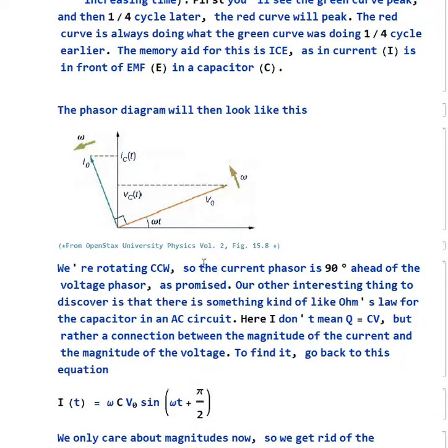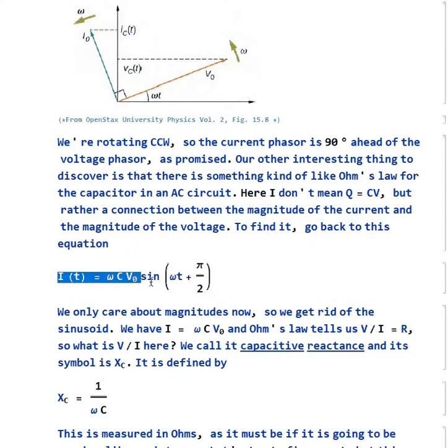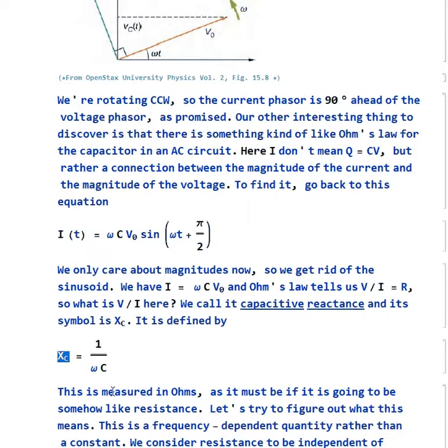One other interesting thing to discover is that there's something like Ohm's law for the capacitor in an AC circuit. I don't mean the Q = CV thing that's like Ohm's law, but rather a connection between the magnitude of the current and the magnitude of the voltage. If we want to find it, we can go back to this equation for i. If all we care about is magnitudes, we can get rid of the sine part, and we have essentially i = ωCV₀. Ohm's law tells us V/I is the resistance, but V/I here is something we call the capacitive reactance. The symbol is X_C, and we could write it as 1/ωC. This has to be measured in ohms, and if it's going to be something like a resistance, it has to be measured in ohms.